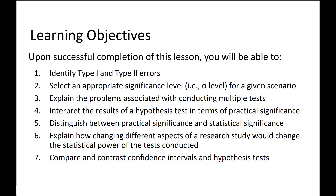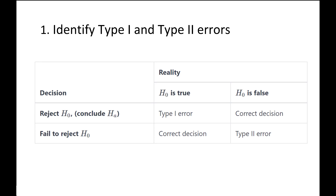Let's start with identifying type 1 and type 2 errors. When we talk about type 1 and type 2 errors, we usually make a table where on one side we have our decision and on the other side we have reality — whether or not the null hypothesis is really true in the population. Make sure you pay attention to how the rows and columns are labeled.